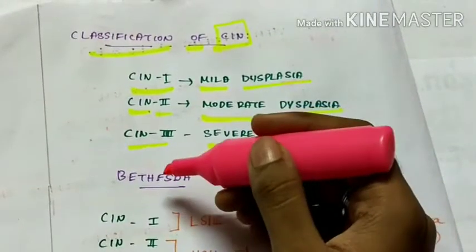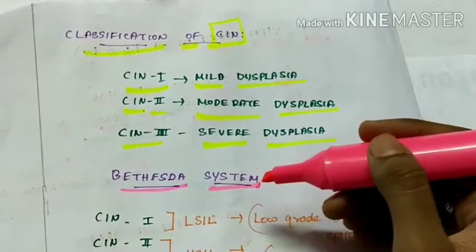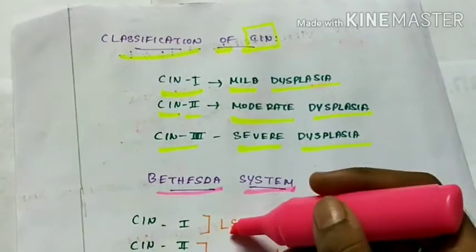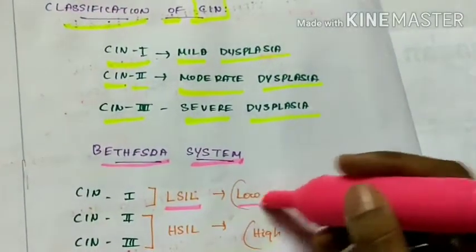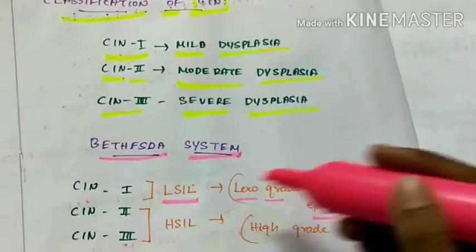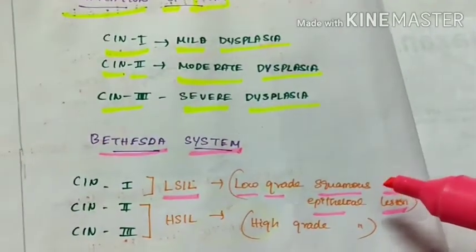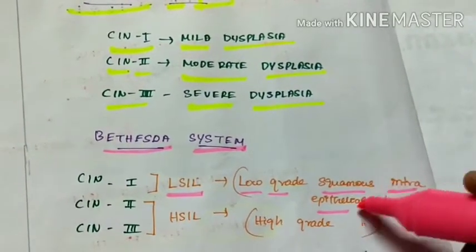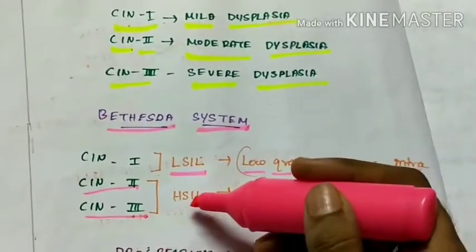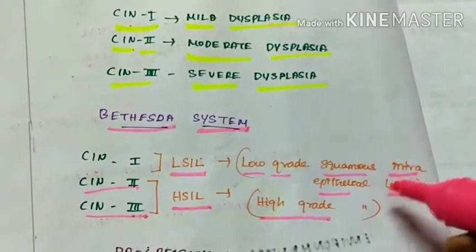Next there is a system called Bethesda system which also classifies the CIN. In this system the CIN1 is called as LSIL, that is low grade squamous intraepithelial lesion. L stands for low grade. SIL is squamous intraepithelial lesion. So the CIN is also called as squamous intraepithelial lesion. Whereas the CIN2 and the CIN3 are classified into HSIL which is high grade squamous intraepithelial lesion.